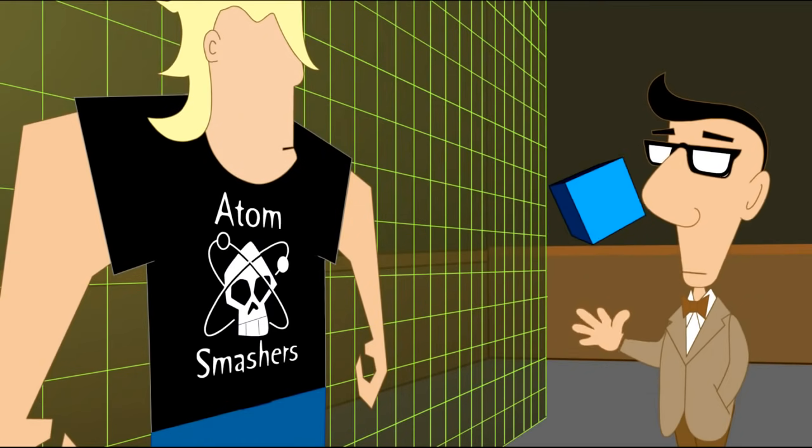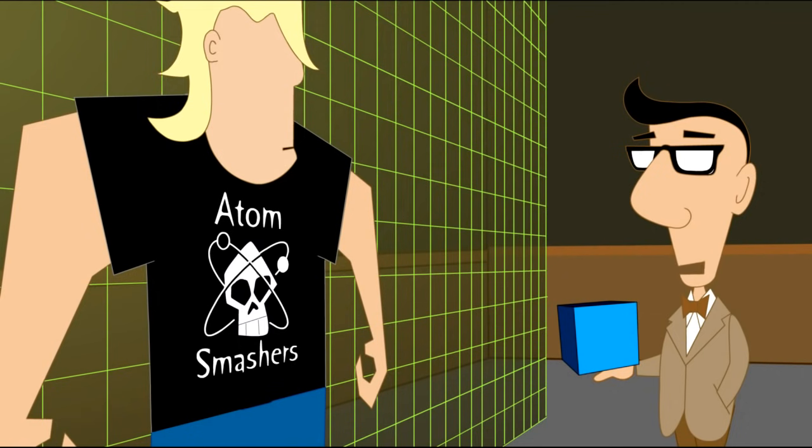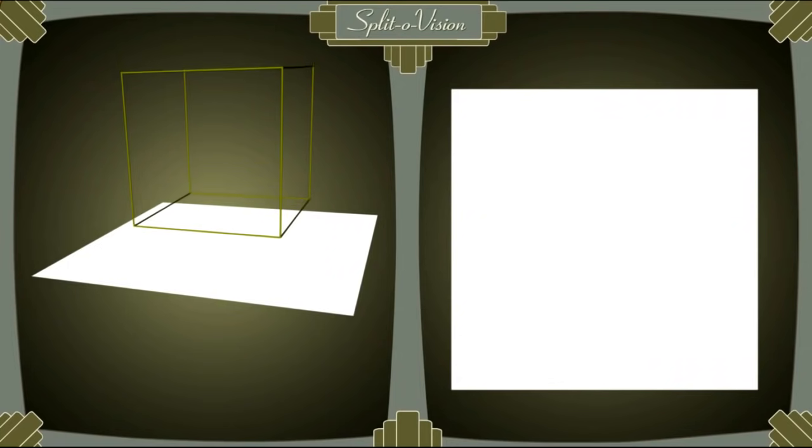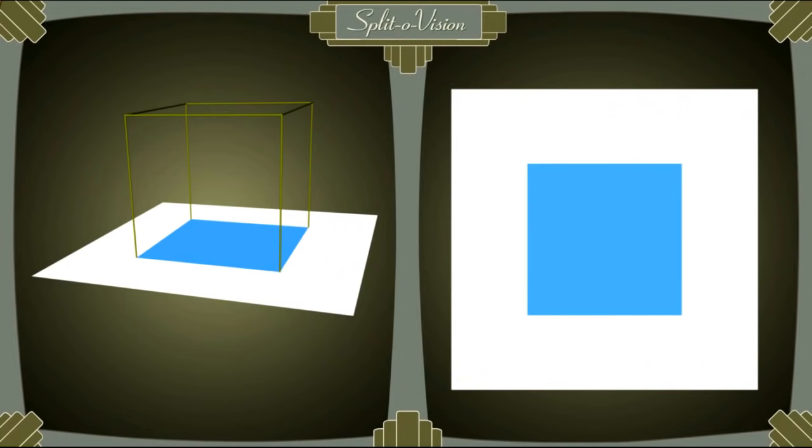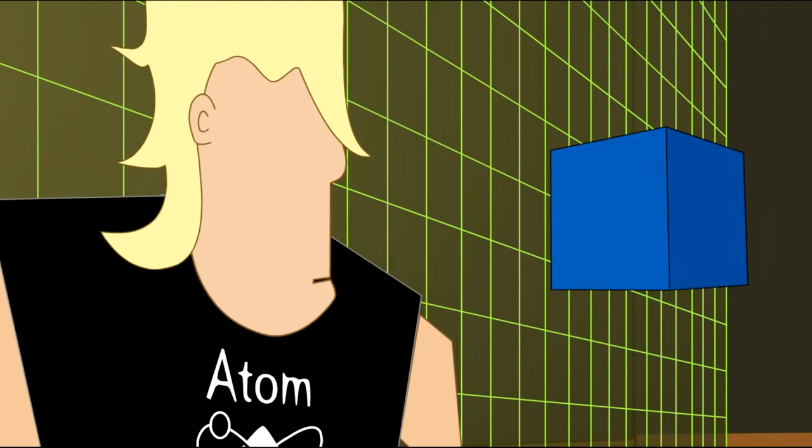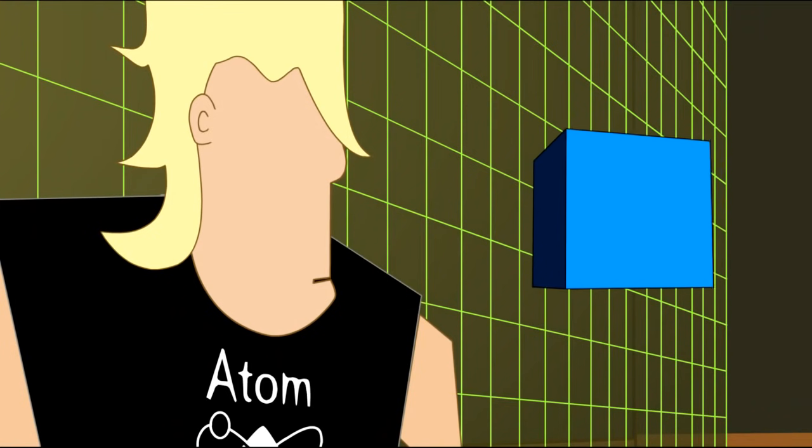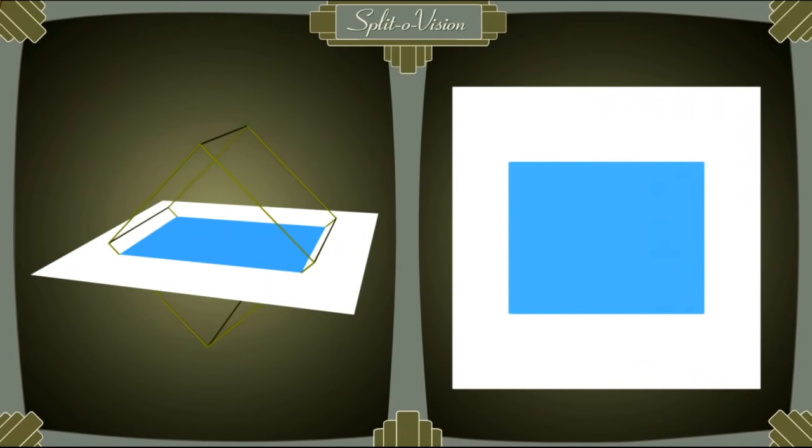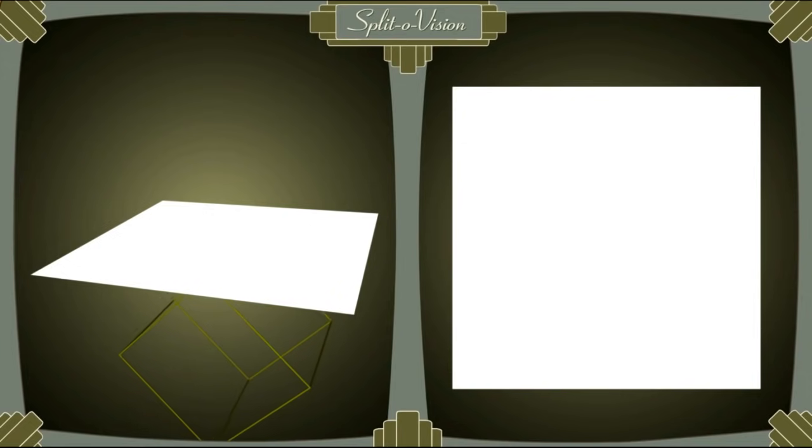A three-dimensional cube passing through a two-dimensional space would appear even stranger. In this case, what Mr. Moosemasher would see would depend on the way the cube was positioned as it passed through the plane. If one of the flat sides of the cube intersected the plane first, Mr. Moosemasher would see a square suddenly appear out of nowhere. As the cube passed through his space, the square would remain for a short time and then disappear. On the other hand, if one of the edges of the cube intersected the plane first, Mr. Moosemasher would see a line appear, grow fatter, then thinner, and finally disappear.